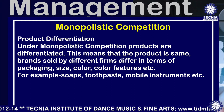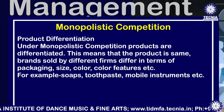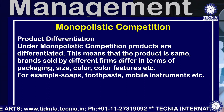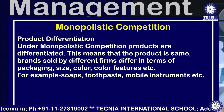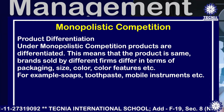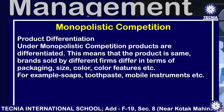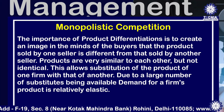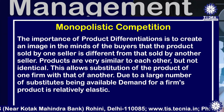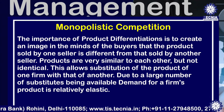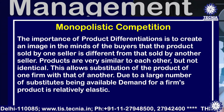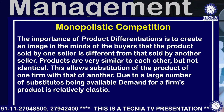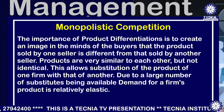The second feature is product differentiation. Under monopolistic competition, products are differentiated — that is, the product is essentially the same but has certain distinguishing factors. The brands sold by firms differ in terms of packaging, size, color, features etc. For example, soaps, toothpaste, mobile instruments etc. Product differentiation creates an image in the minds of people that the product sold by one seller is different from that of another. Products are very similar but not identical or homogeneous, which allows substitution between firms' products. Due to a large number of substitutes being available, demand for a firm's product is relatively elastic.